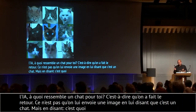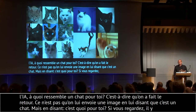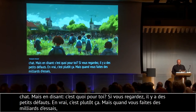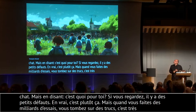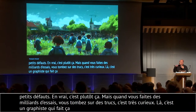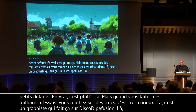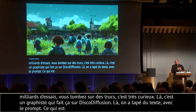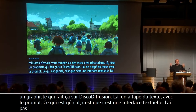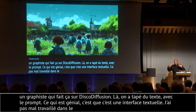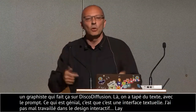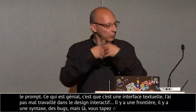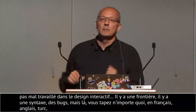Quand vous faites des milliards d'essais, à un moment donné vous tombez sur des trucs très curieux. Là, c'est un graphiste qui fait ça sur Disco Diffusion. On a tapé un texte — ce qu'on appelle le prompt, la phrase qui dit ce que tu veux. Ce qui est génial, c'est que c'est une interface textuelle. Moi j'ai travaillé dans le design génératif où c'est du code — il y a une syntaxe, des bugs, au moindre point-virgule oublié ça ne marche pas. Là, vous tapez n'importe quoi en anglais, en français, en turc — il vous répond quelque chose. Une image faite en 20 secondes.